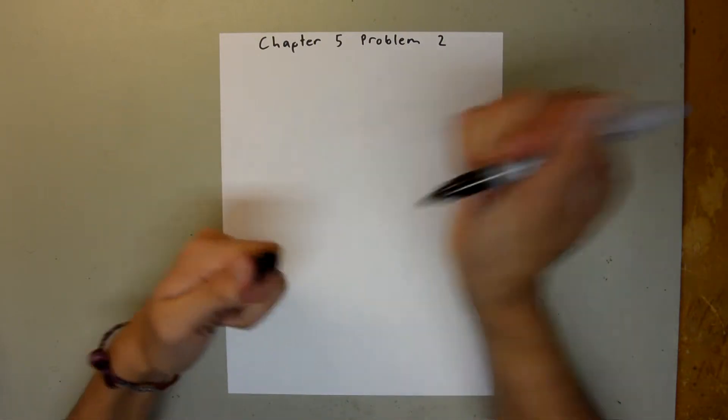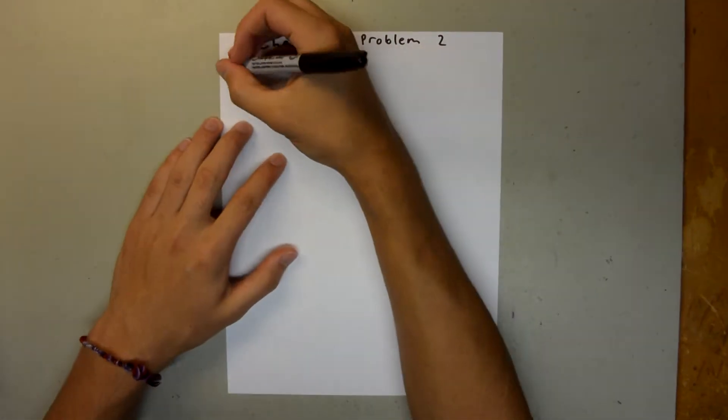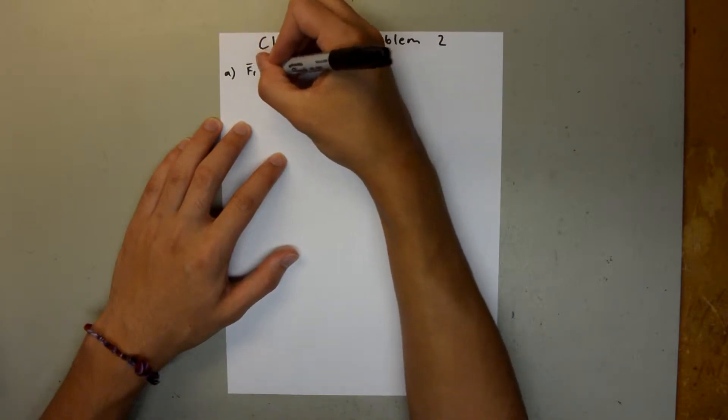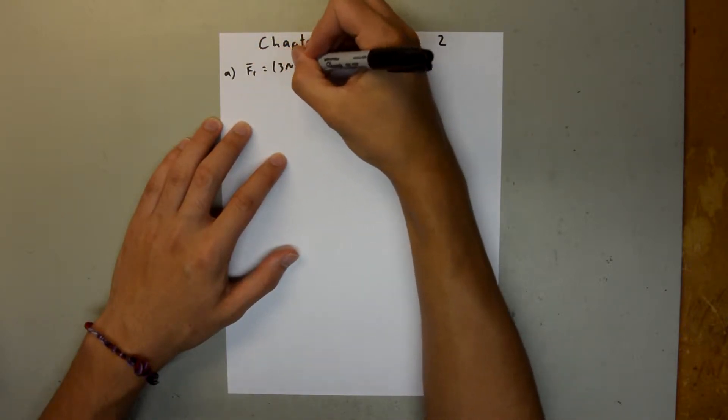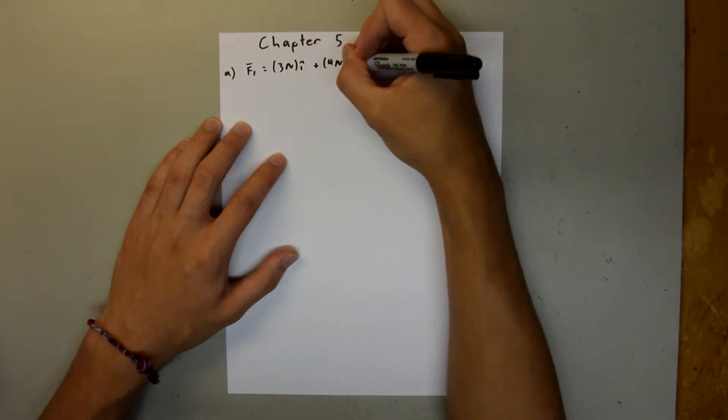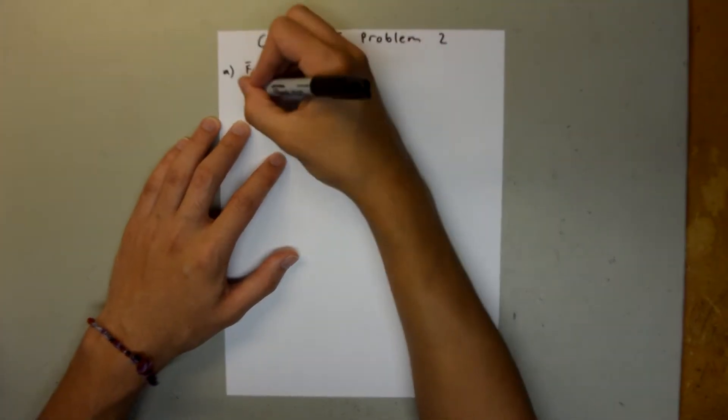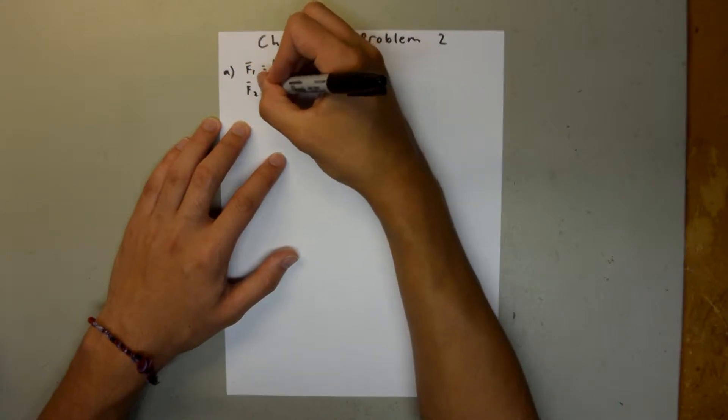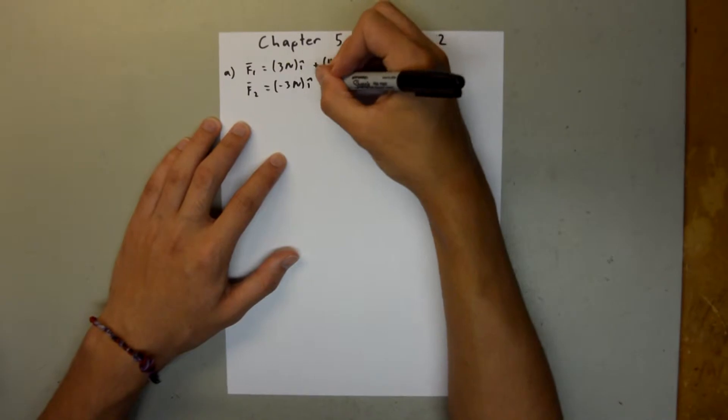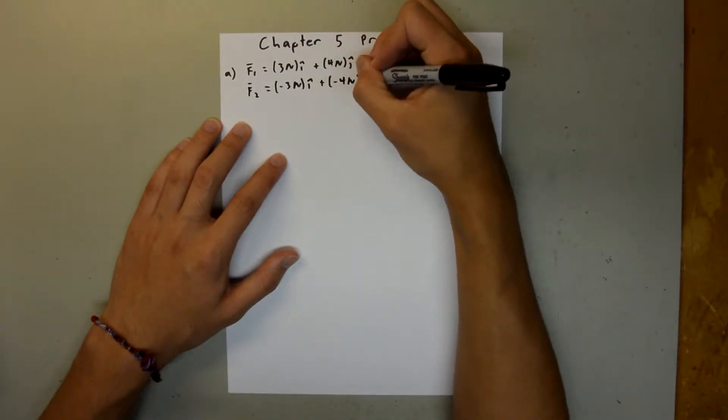So, in Part A, we have our first force, which is 3 newtons i-hat plus 4 newtons j-hat. And our second force, which is equal to negative 3 newtons i-hat and negative 4 newtons j-hat.